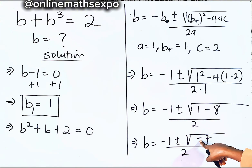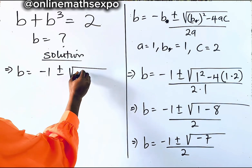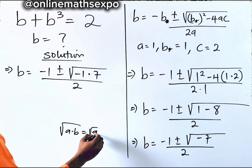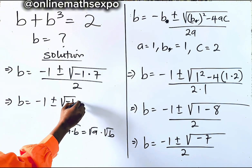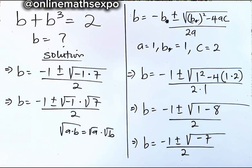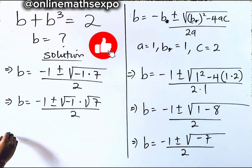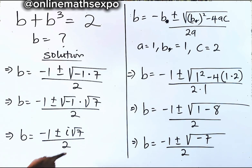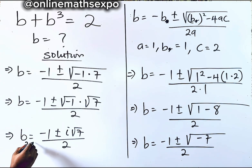Observe there is a negative sign under the square root, leading us to a complex solution. We write √(−7) = √(−1 × 7) = √(−1) · √7. Since √(−1) = i, we have b = (−1 ± i√7) / 2.